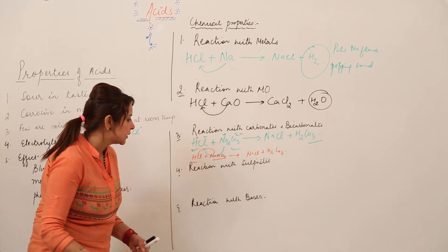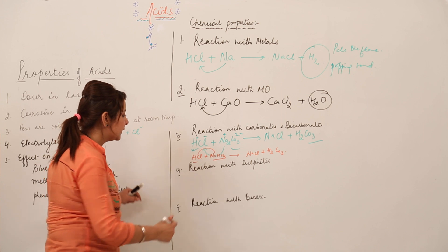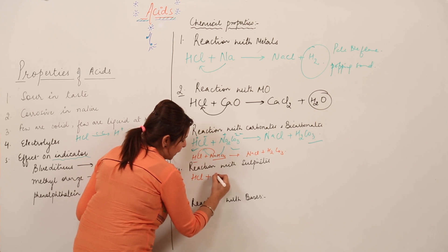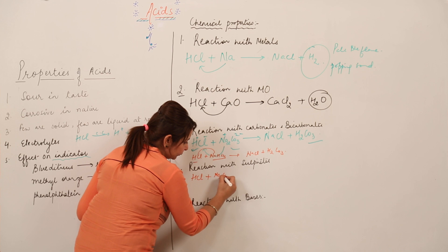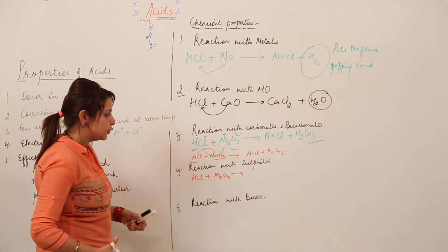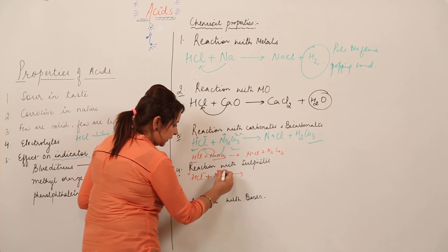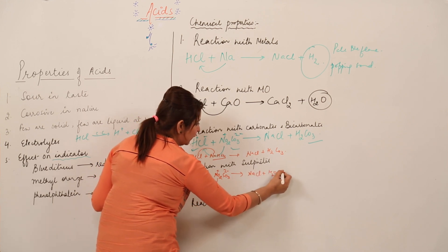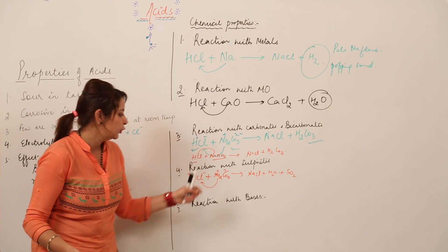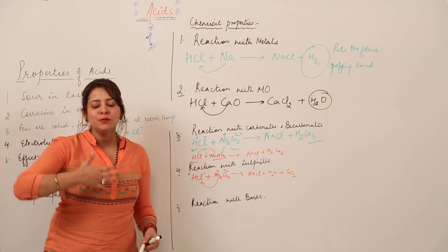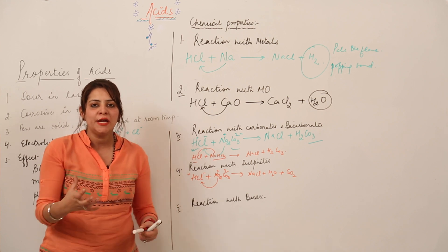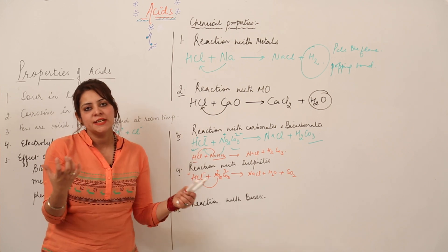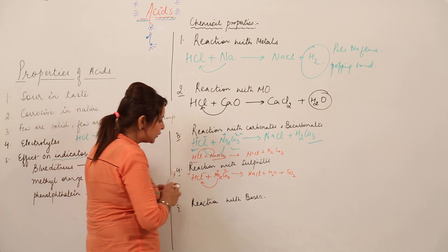Next, the reaction of acid with sulfites. Suppose I have HCl and sodium sulfite. Na combines with Cl to give NaCl, and we also get H₂O and SO₂ gas. As you're familiar with valencies and how reactions take place, it is easy — just write the valencies of the reactants and interchange their partners.